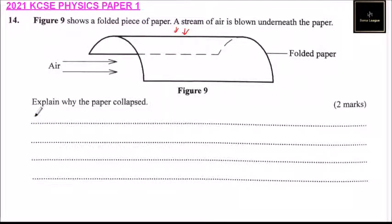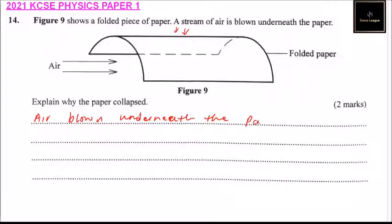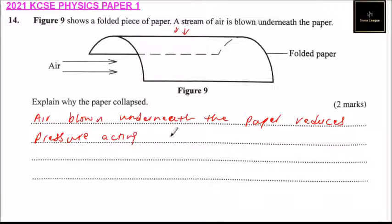So we can say: air blown underneath the paper reduces the pressure acting on the paper. Atmospheric pressure acting on top.